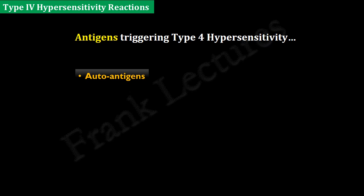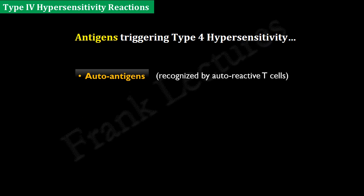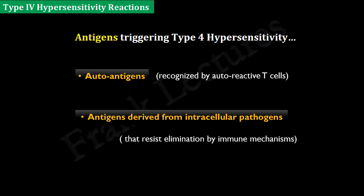These antigens can also be auto-antigens that are recognized by auto-reactive T-cells. Recall that auto-reactive T-cells can be present in case of failure of self-tolerance mechanisms. Antigens derived from intracellular pathogens can also trigger type 4 hypersensitivity reactions — mostly microbes that escape elimination by immune mechanisms and cause prolonged infections, for example Mycobacterium.